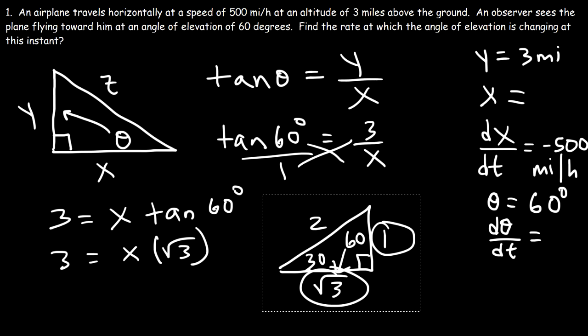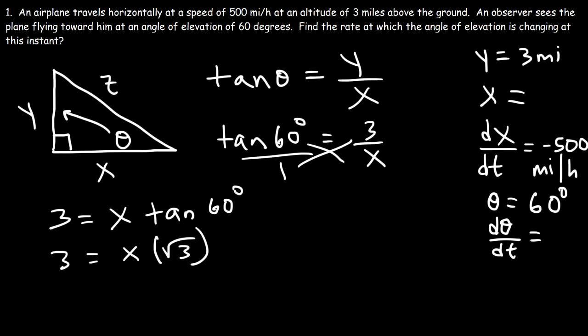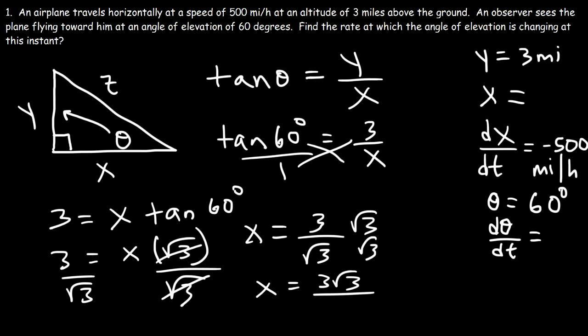So it's good to know the 30-60-90 reference triangle and the 45-45-90 reference triangle. So now let's divide both sides by the square root of 3. So x is equal to 3 divided by the square root of 3. So if we rationalize it, the square root of 3 times the square root of 3 is the square root of 9, which is 3. And 3 divided by 3 is 1. So x is equal to the square root of 3.